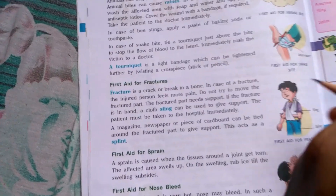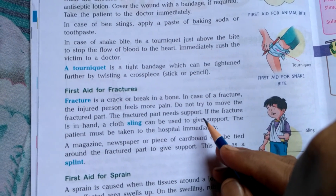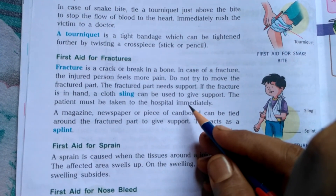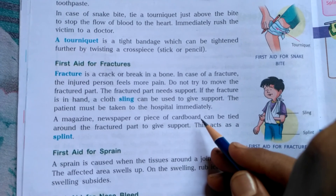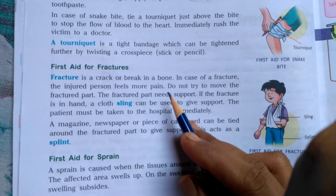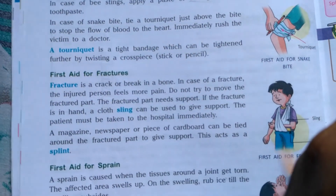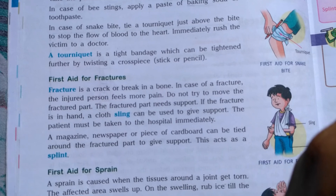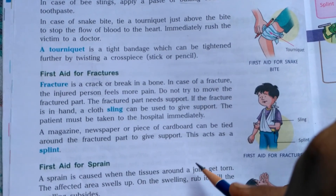Do not try to move the fractured part — this is very important to keep in mind. Wherever the fracture has happened, whether it is the hand, legs, or any body part where the bone has broken, that part must remain still with no movement, as moving it will further worsen the condition. The fractured part needs support because the skeletal system normally gives support to the whole body, but a broken bone now needs external support.